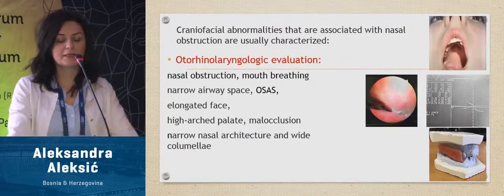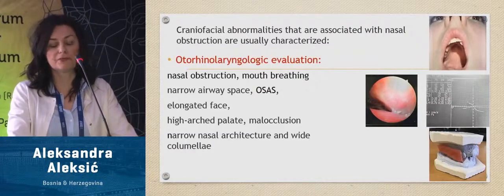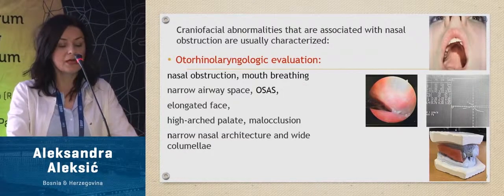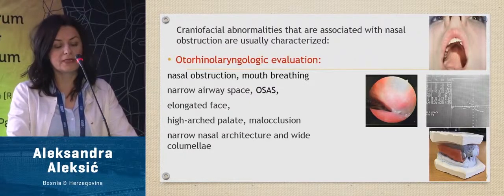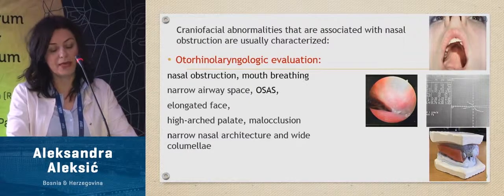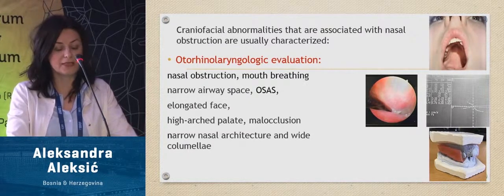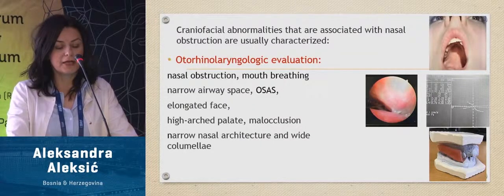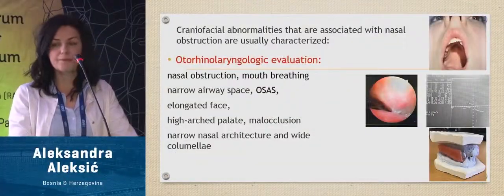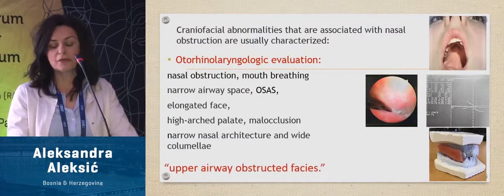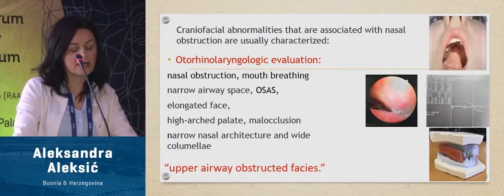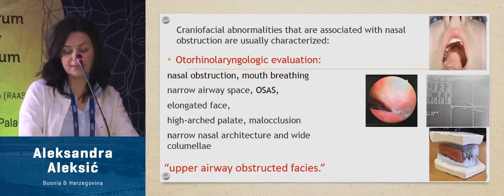Craniofacial abnormalities associated with nasal obstruction are usually characterized by mouth breathing, narrow airway space, elongated face, high arch palate, malocclusion, narrow nasal architecture, and wide columella. The overall feature can be characterized as upper airway obstructed face.